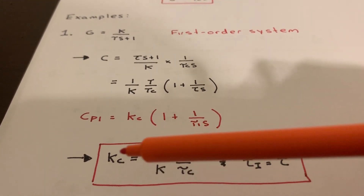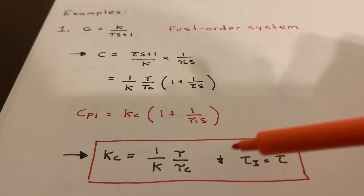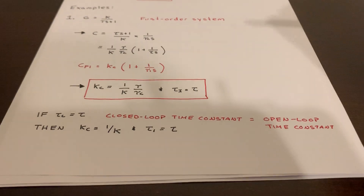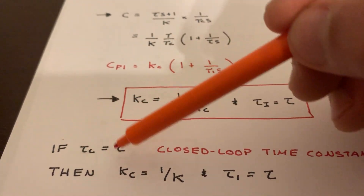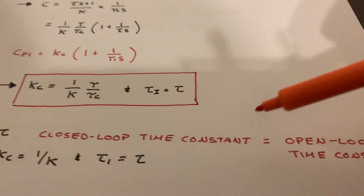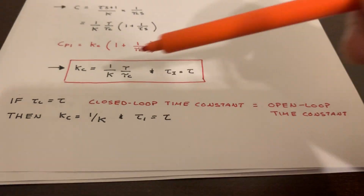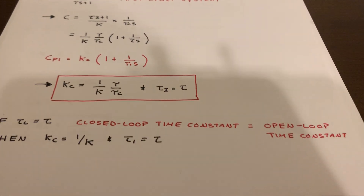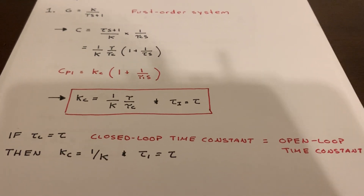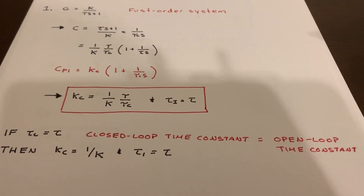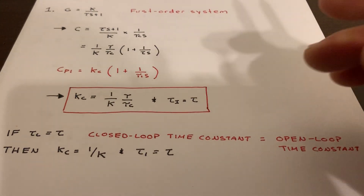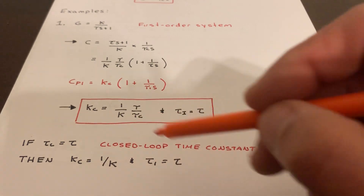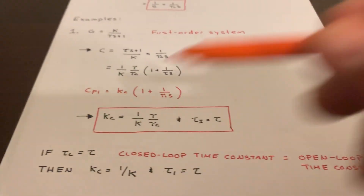We can tease out the tuning parameters: K_C is one over K times τ over τ_C, and our integral time equals our process time constant. There's a nice shortcut here: if we set our closed loop time constant equal to our open loop time constant, then this formula simplifies down to K_C equals one over K and τ_I equals τ. That's the tuning rule we used in the previous lecture, and it's actually the only tuning rule I expect you to memorize. Typically you don't care too much about the process time constant — if your system takes an hour to equilibrate, you're happy if the closed loop system also takes an hour.